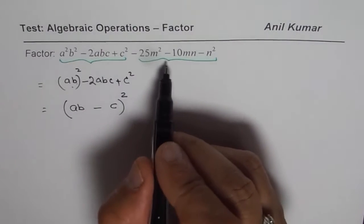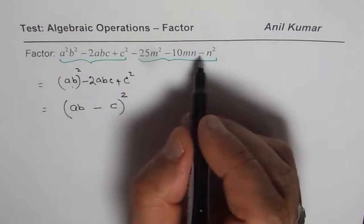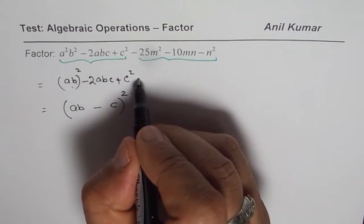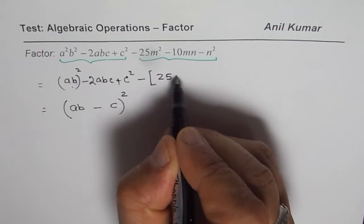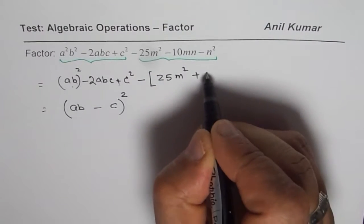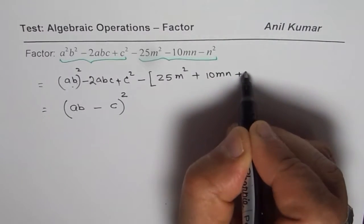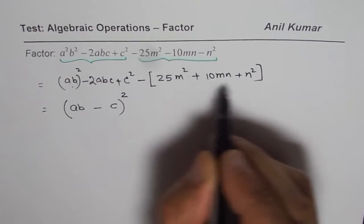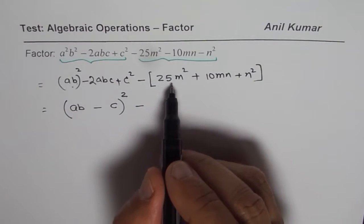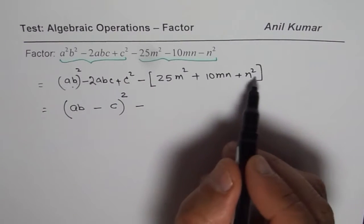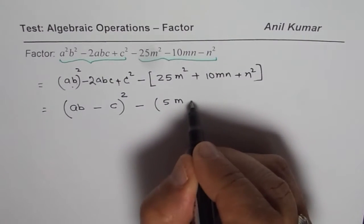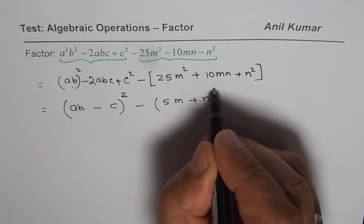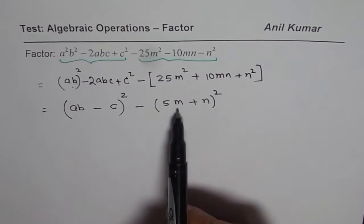Perfect. Now let us look into the next trinomial. Let me take minus common first. So if I take minus common, I am left with 25m² + 10mn + n². Now this is also a perfect square. I could write this as (5m + n)².